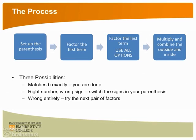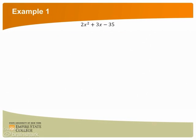Some examples should illuminate. Suppose we want to factor 2x squared plus 3x minus 35. We start by looking at the last operation in the polynomial. Because we see a minus 35, we know that our parentheses will have a plus and a minus in them. Now we want to factor the leading term of 2x squared, which would be 2x and x, and we place these factors in the parentheses.